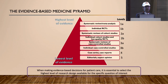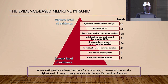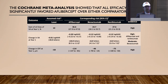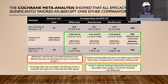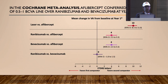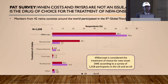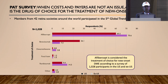The evidence-based medicine pyramid shows that systematic reviews represent the highest level of evidence, while editorials, case series, and case reports are the lowest. The Cochrane meta-analysis, the highest level of evidence, showed that all efficacy outcomes significantly favored aflibercept over comparators at year 1, conferring an advantage in best corrected visual acuity over ranibizumab and bevacizumab. The PAT survey of the American Society of Retina Specialists also indicated aflibercept is considered the treatment of choice for new-onset DME.